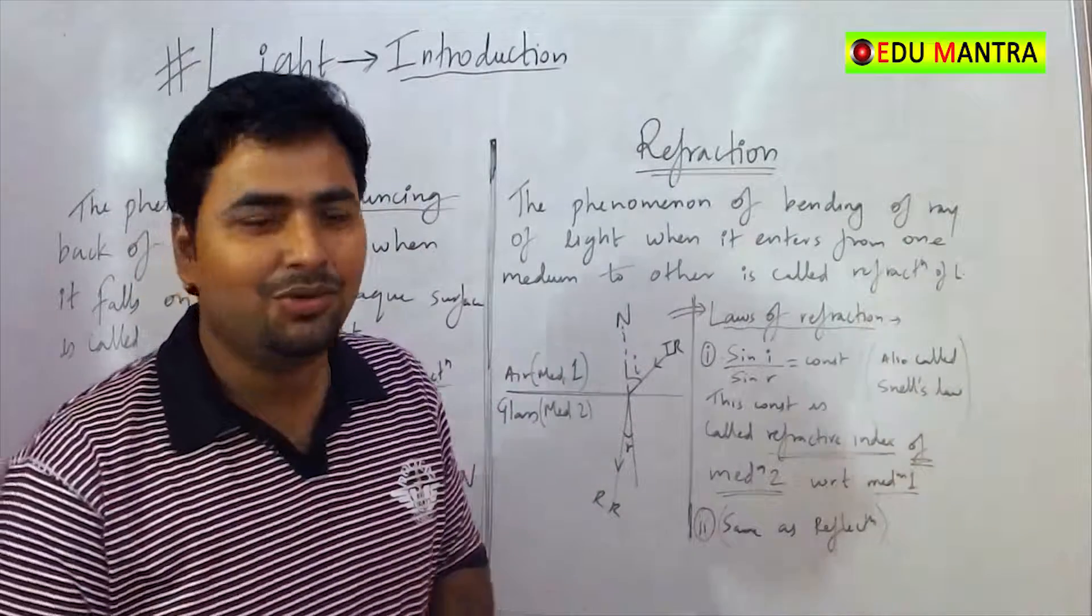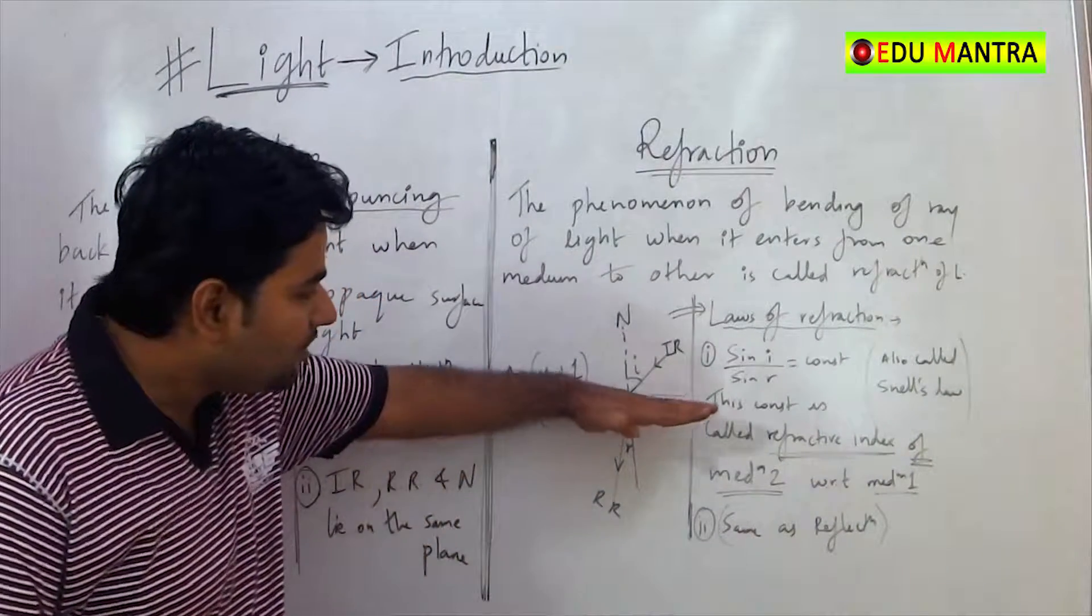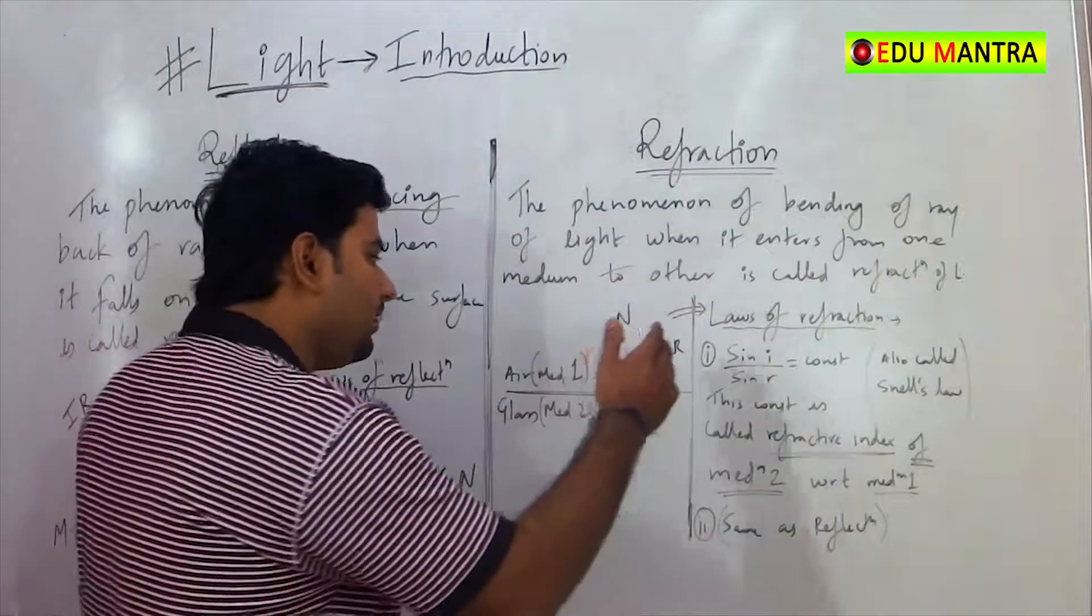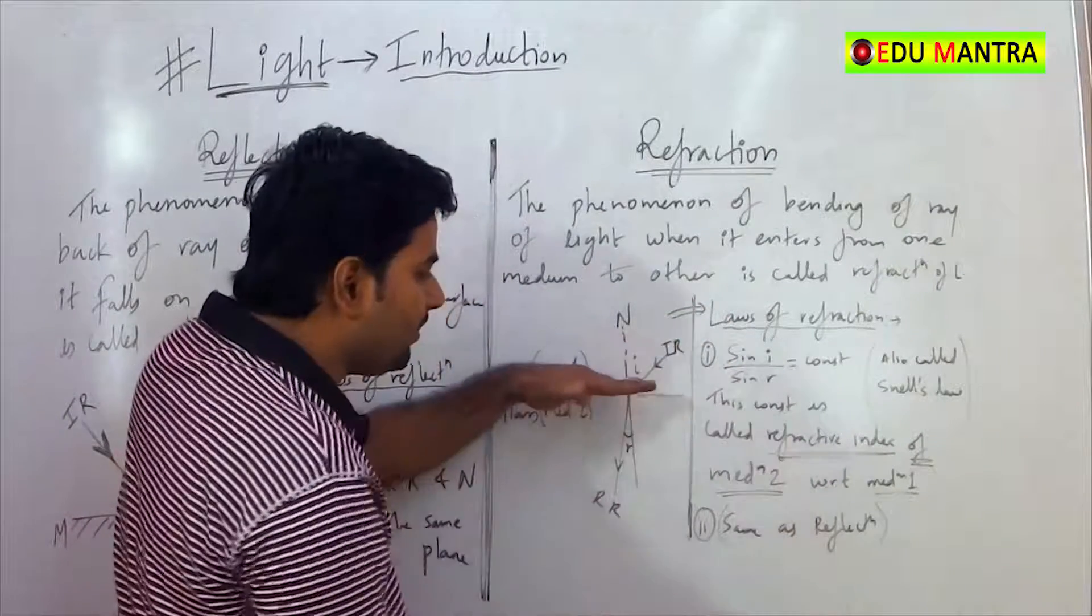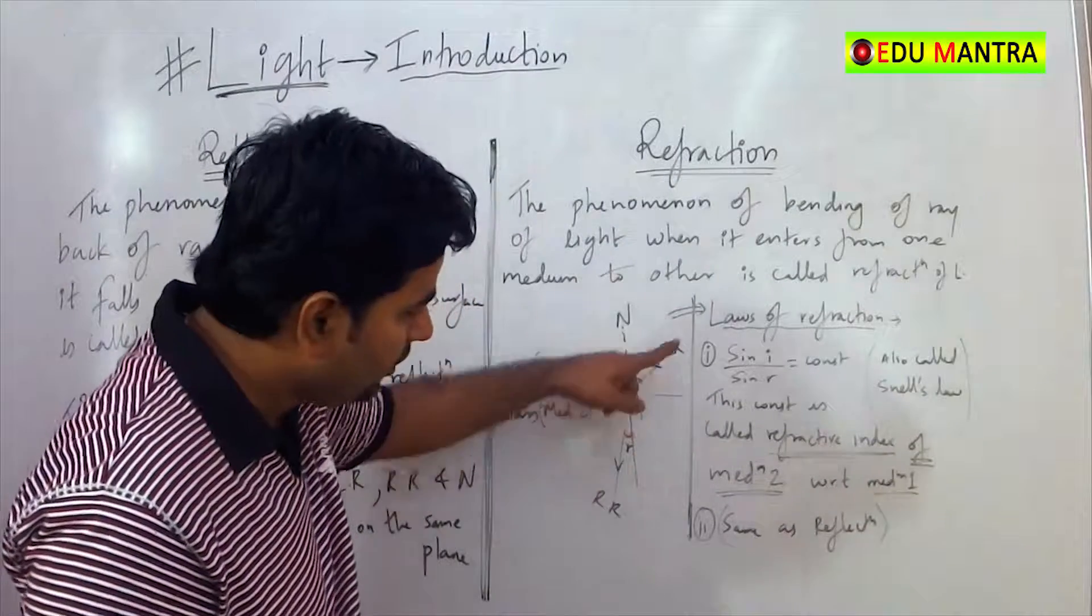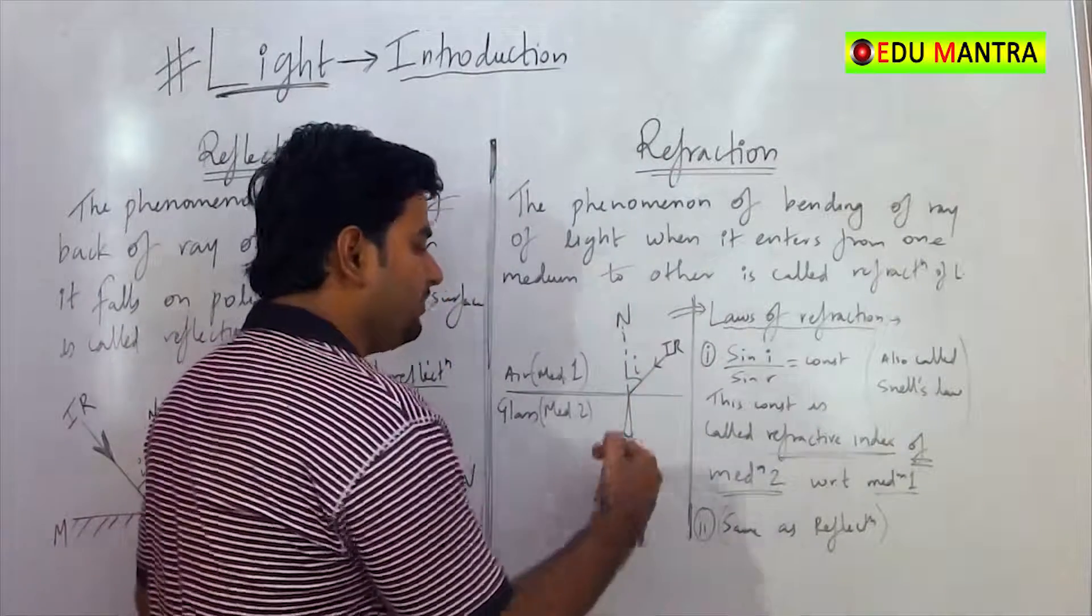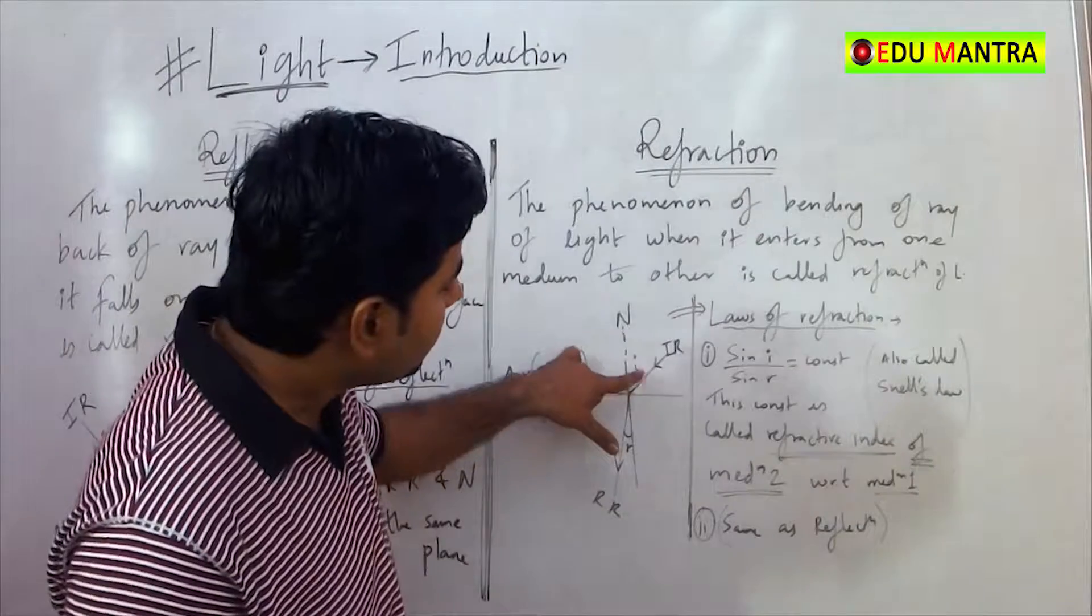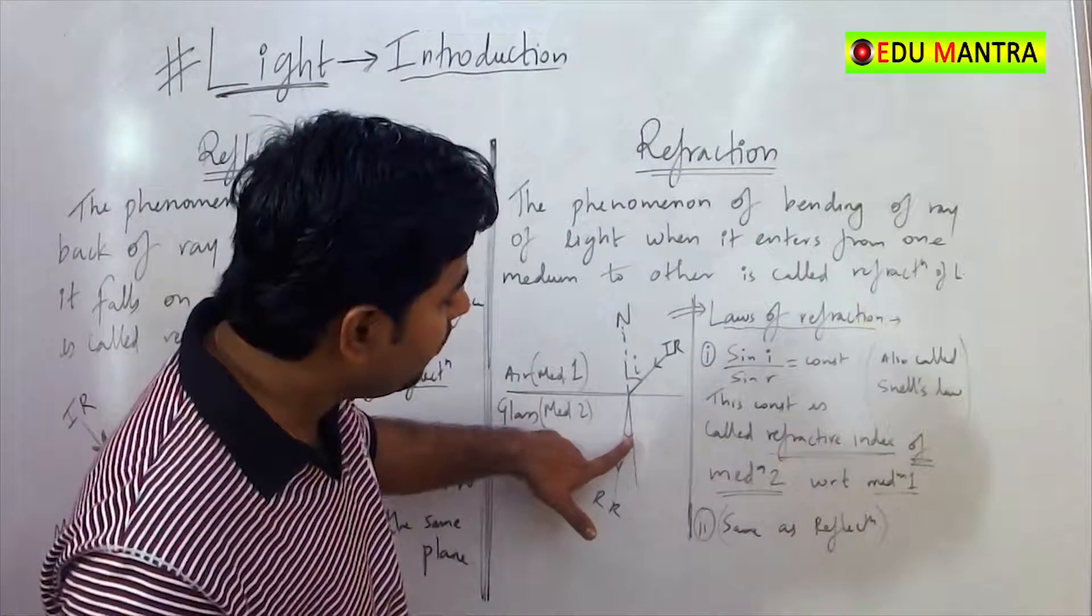Suppose this is the interface of air and glass. Above is air, below is glass. And here the light comes straight, and where it enters, at exactly that interface it bends. So incident ray becomes refracted. The incident ray which was going straight bends. This is called refraction. And the angle formed with normal, this is angle of incidence and this will be angle of refraction.